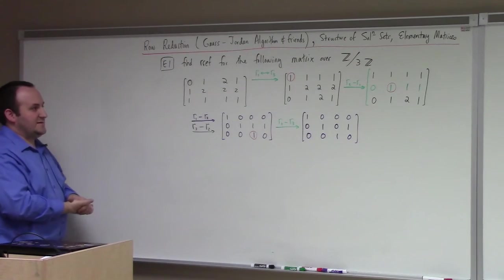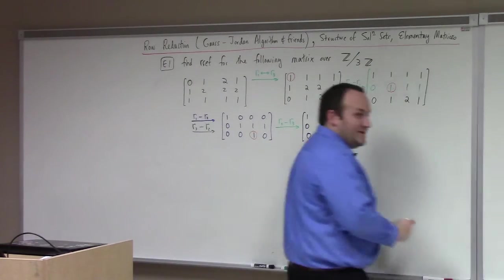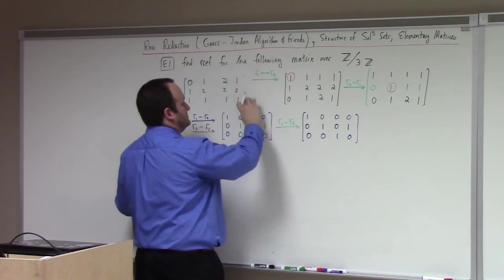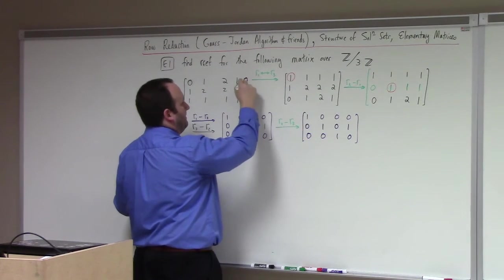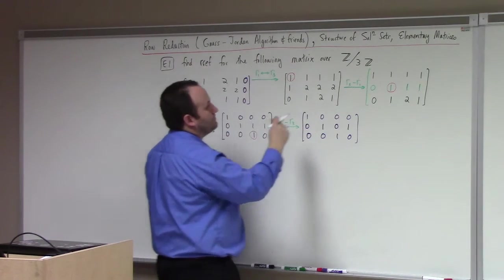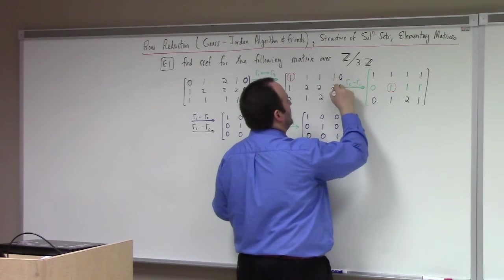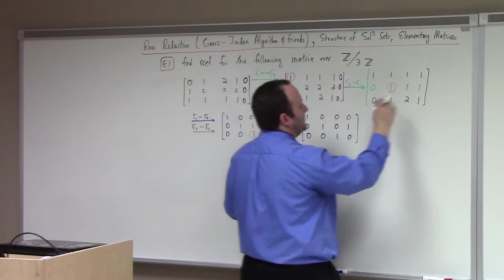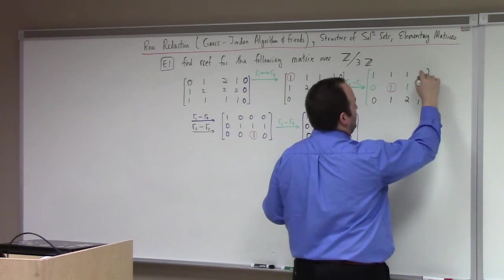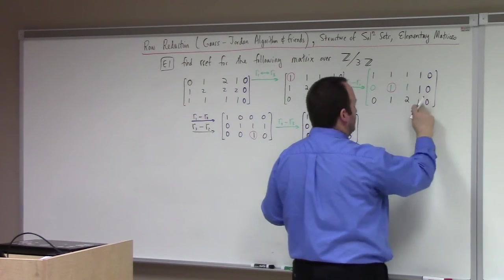So to make this exciting, let me tack on another column of zeros. Student: Is reduced row echelon form — should that always end up as ones and zeros? Instructor: No. Will ones and zeros always be involved? Yes. Will it always be just ones and zeros? Certainly not.